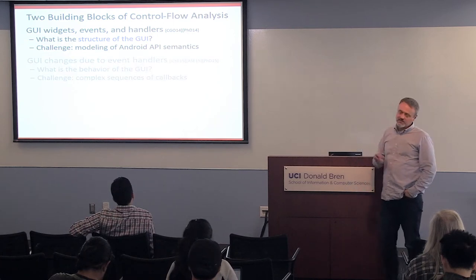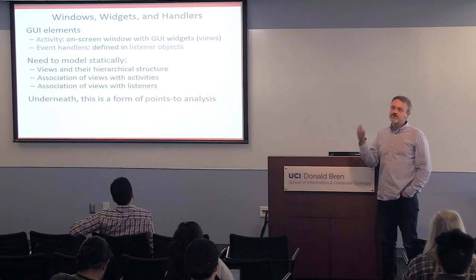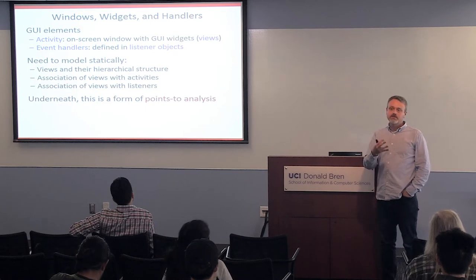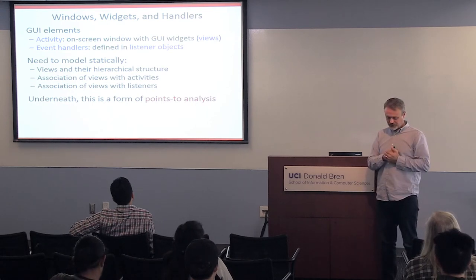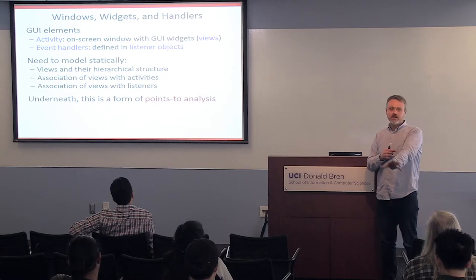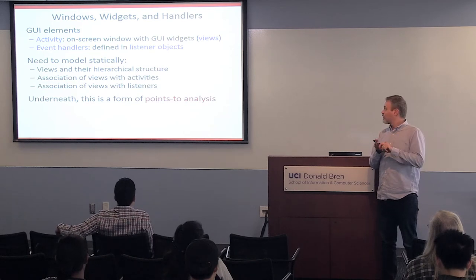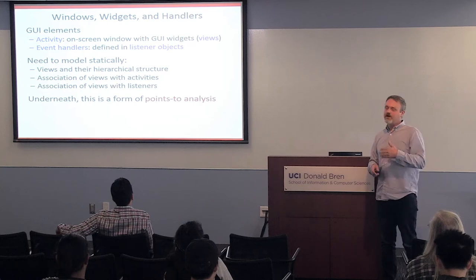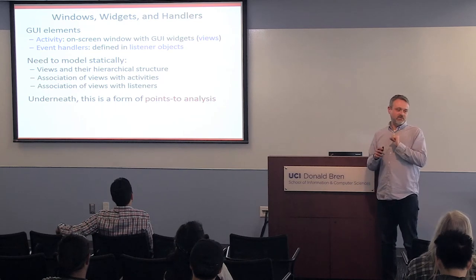I will first talk about the problem of how to identify the structure of the GUI statically. It's a fairly natural manifestation of what are the interesting runtime entities that exist as you work with your Android application — the graphical user interface is what users interact with, and the events in that interface drive the entire behavior. Specifically, I'll talk about activities, widgets (called views in Android), and event handlers (defined inside listener objects). The goal is to model statically the relationships between these different entities — it has a similar flavor to points-to analysis, but it's a lot more complicated.